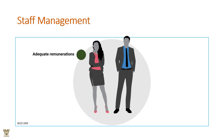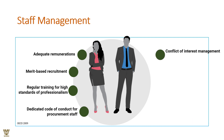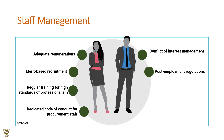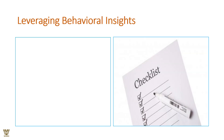Staff management is critical: people should be adequately paid to attract quality manpower. Recruitment should always be merit-based. Regular training is required to keep staff motivated and dedicated. There should also be a code of conduct for procurement staff covering conflict of interest, post-employment regulations, gifts and gratuity policies, and reporting channels for wrongdoings.